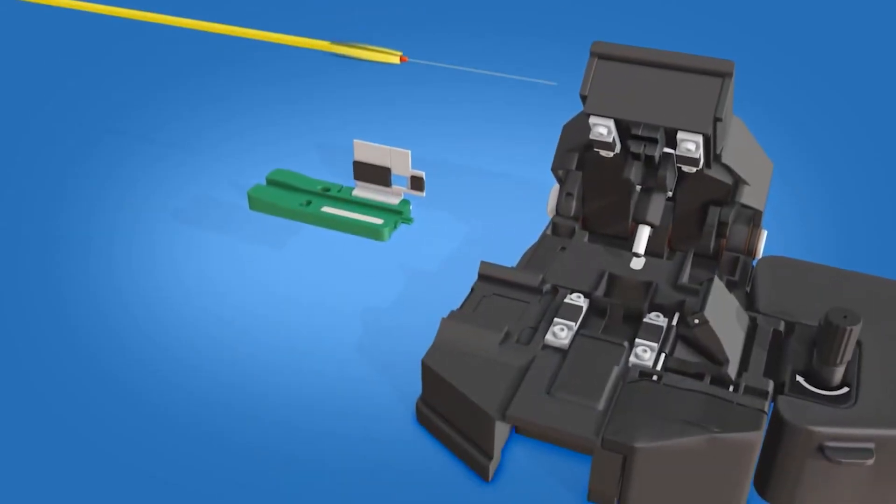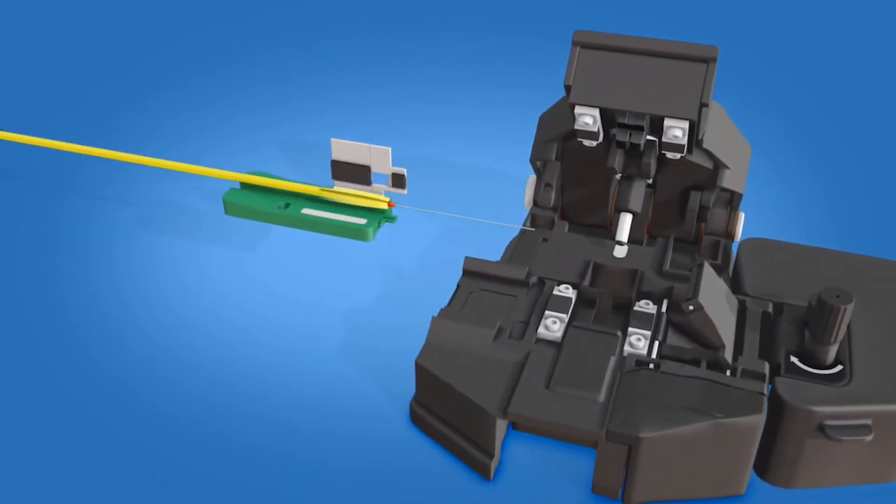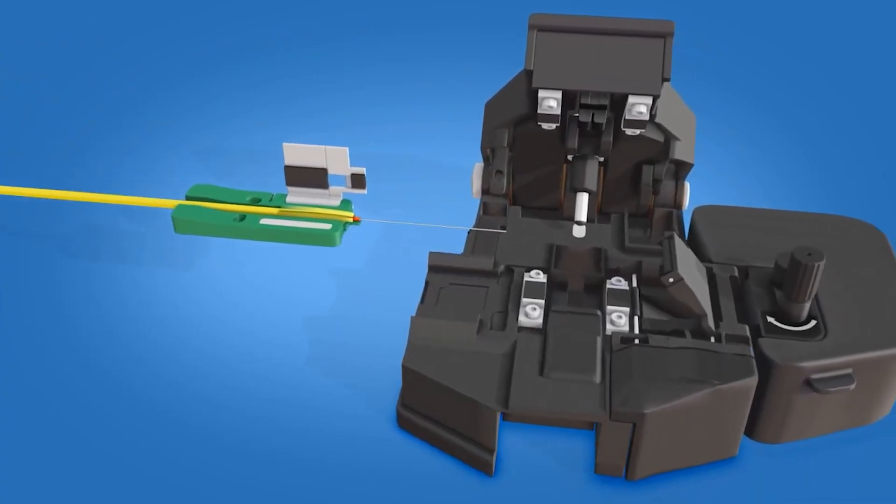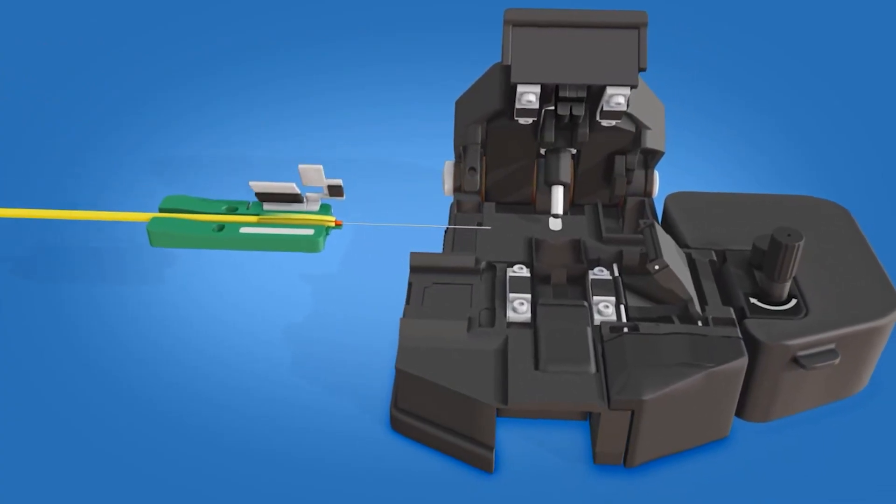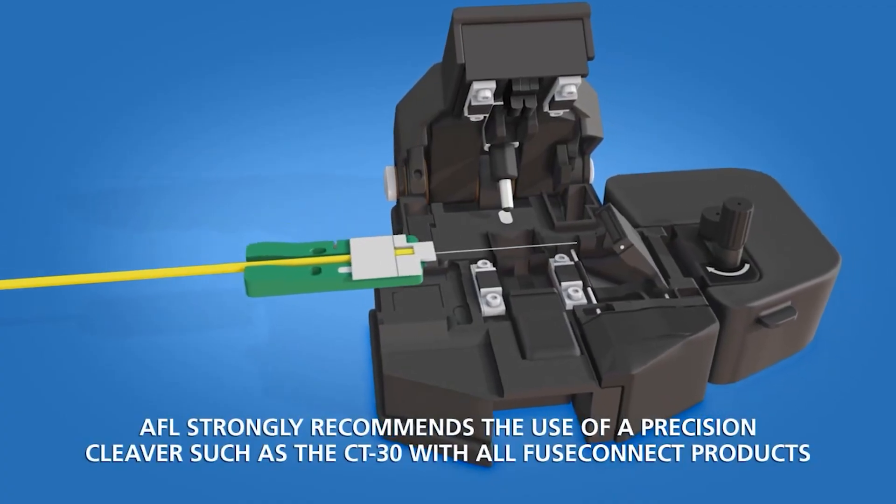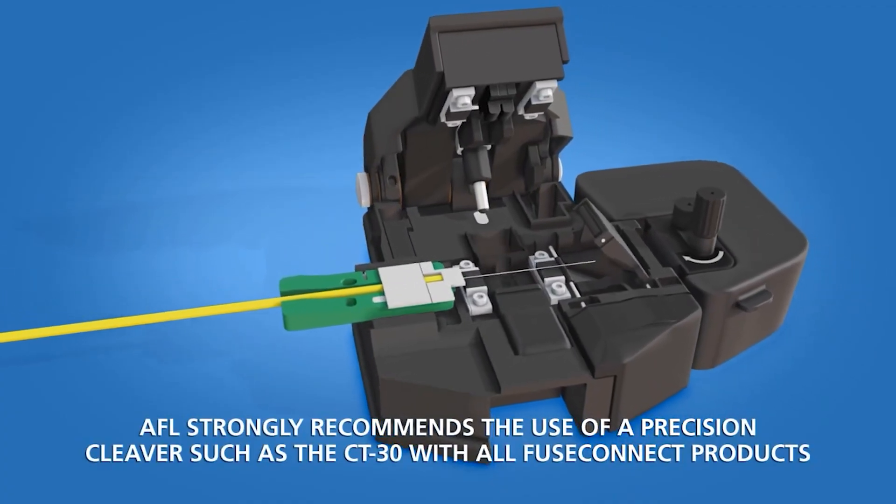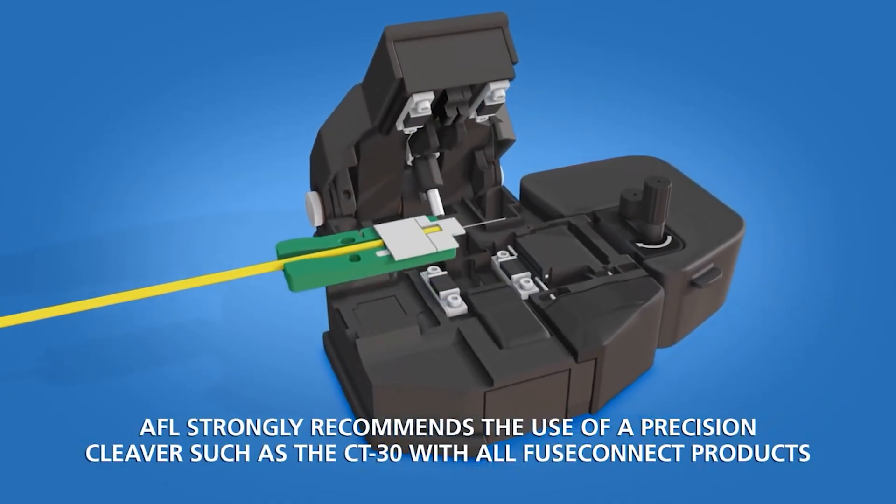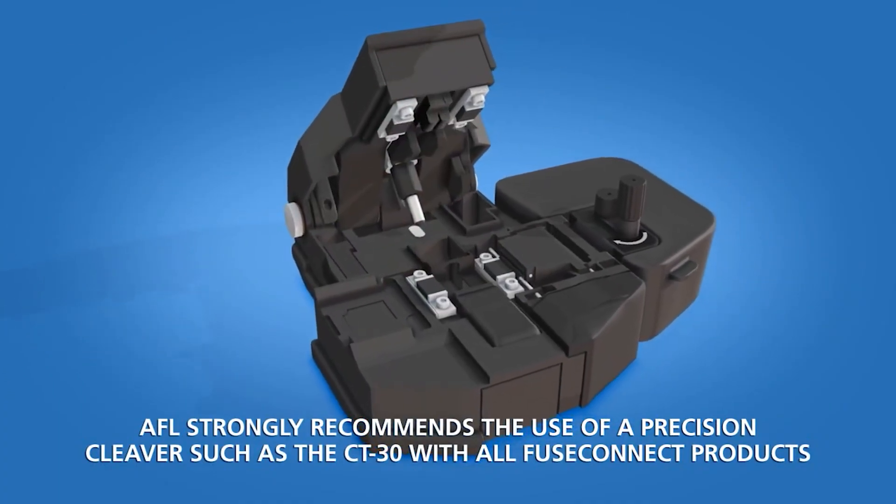Place the fiber into the 3 mm fiber holder with the end of the 900 micron coating at the end of the fiber holder. Close the fiber holder clamp. Load the fiber holder into a precision cleaver and cleave the fiber. Carefully remove the fiber holder with the cleaved fiber end from the precision cleaver.